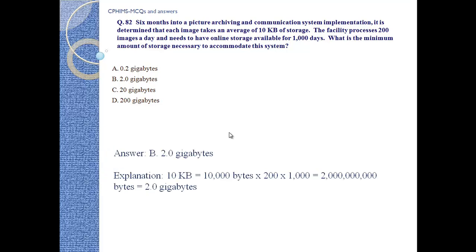Answer B: 2.0 GB. Explanation: 10 KB is equal to 10,000 bytes, multiplied by 200 images processed daily and 1,000 days. If you multiply all this, the outcome will come to 2.0 GB.